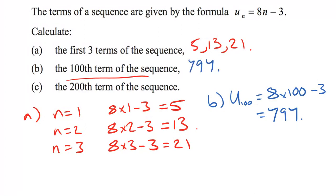The 200th term in the list, you can see what's happening here. We're trying to find U_200, and that is going to be 8 times 200 minus 3.